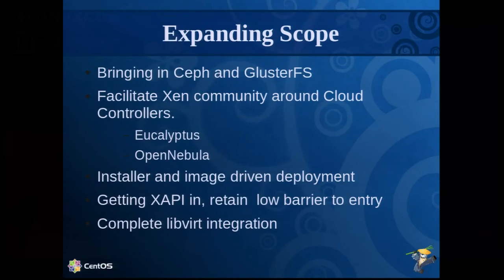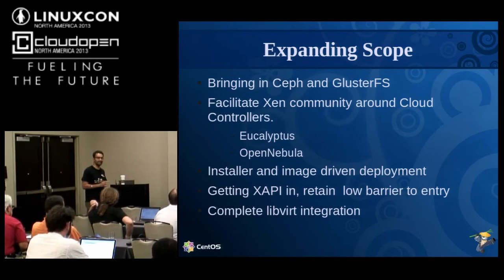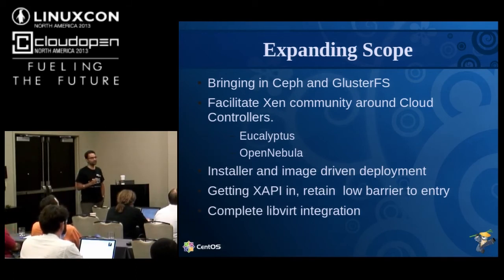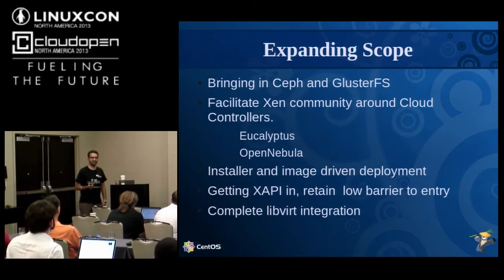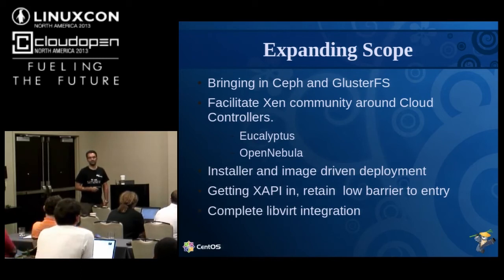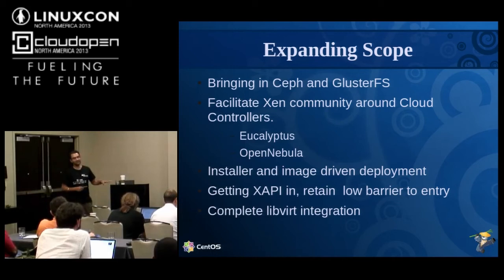In terms of future plans, we're looking to expand scope. We've got Ceph and GlusterFS coming in by the end of this month — specific to the functionality needed within the Xen/CentOS stack as used by CloudStack and OpenStack. At the previous Dojo, David Scott from Citrix did a talk on OpenStack running with Xen for CentOS, Xapi, and Ceph — there's a video on the CentOS Project YouTube channel, about 1,500 to 1,600 views. In about 20 minutes, he got the entire CloudStack stack up and in a state where he could scale it. So Ceph and GlusterFS specifically target that platform.